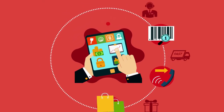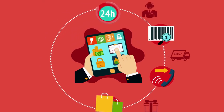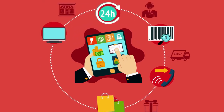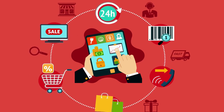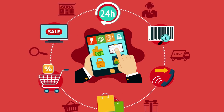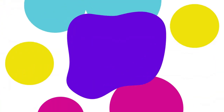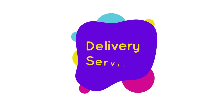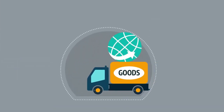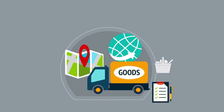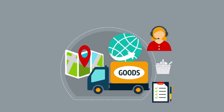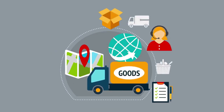E-commerce typically uses the web for at least a part of a transaction's life cycle, although it may also use other technologies such as email. Typical e-commerce transactions include the purchase of products, such as books from Amazon, or services, such as music downloads in the form of digital distribution such as iTunes Store.